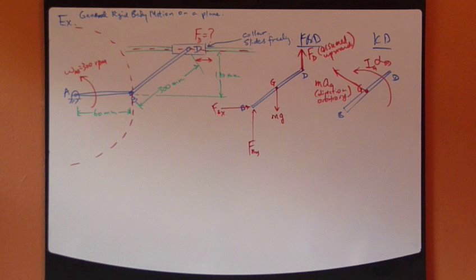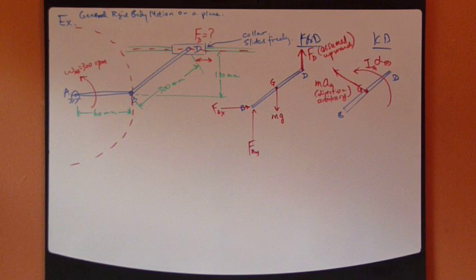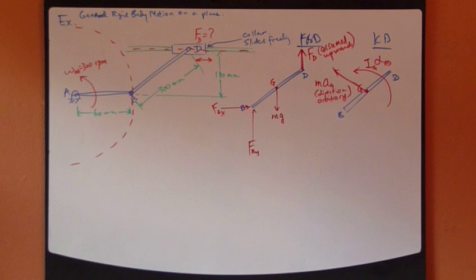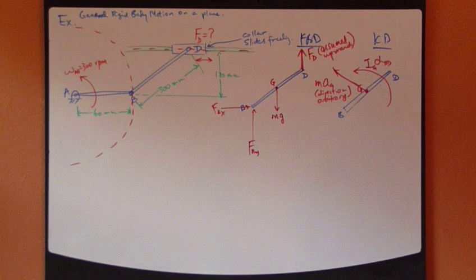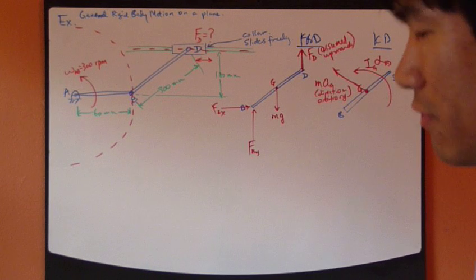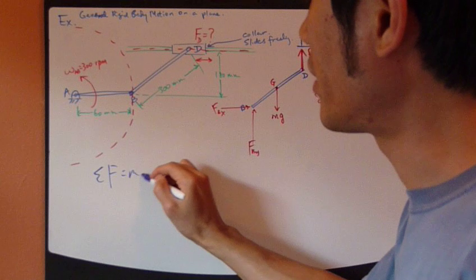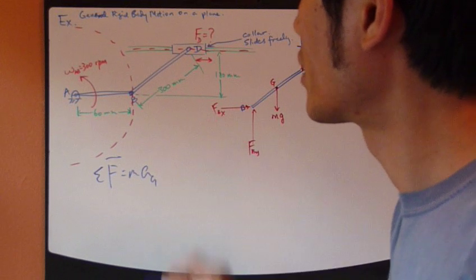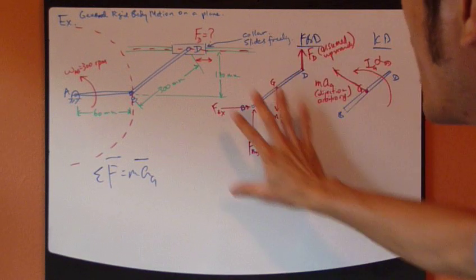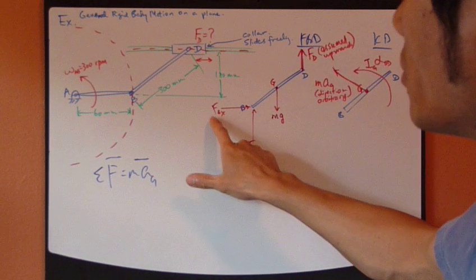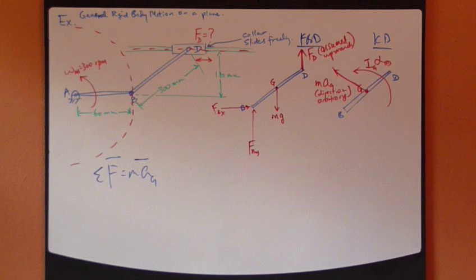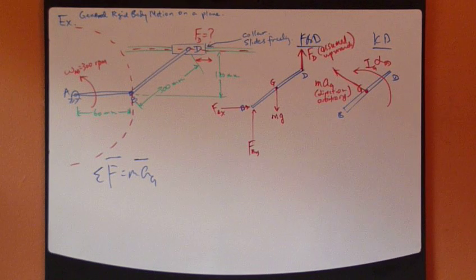So now we have free body diagram and kinetic diagram drawn out. Now let's apply the second law equation. In this problem we would like to find F, the force. Second law itself and sum of forces equals M-A might not be so useful because we need to apply this equation to the entire free body diagram which includes all these unknowns. These are your reaction forces and the F, the unknown. So I like to avoid that.